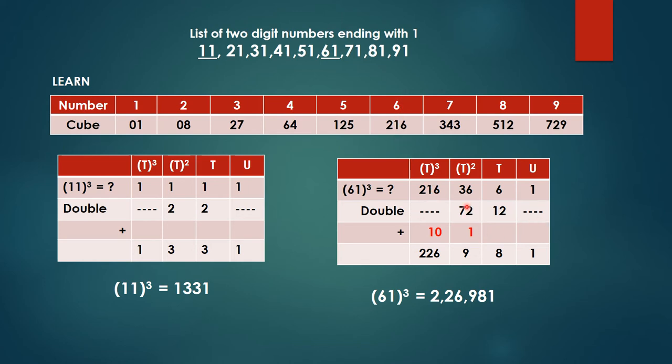Now ignore the first and the last column, just concentrate on the middle column. Double these numbers, that is 6 times 2 is 12, 36 times 2 is 72. Now we need to add all these numbers in columns. So 1 plus nothing is 1 only. 12 plus 6 is 18, so 8 is here, 1 is carried over. Now 36 plus 72 plus 1 gives us 109, 10 is carried over, 9 is here. 216 plus 10 gives us 226. So 61 cubed equals 226981.